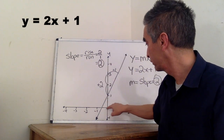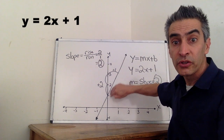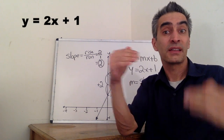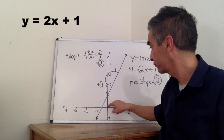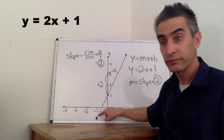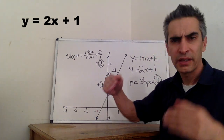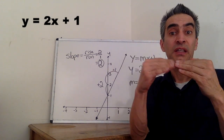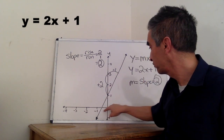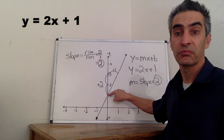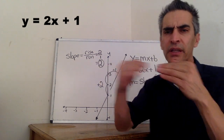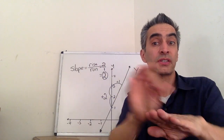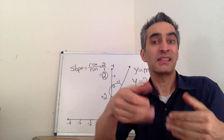If x equals 1, then the slope at that point equals 2. Or if x equals negative 1, then the slope at that point also equals 2. If your function is a line, it's easy to find the slope.